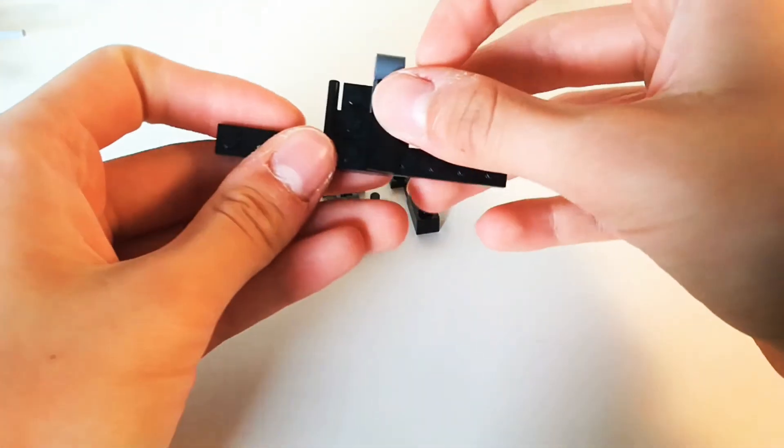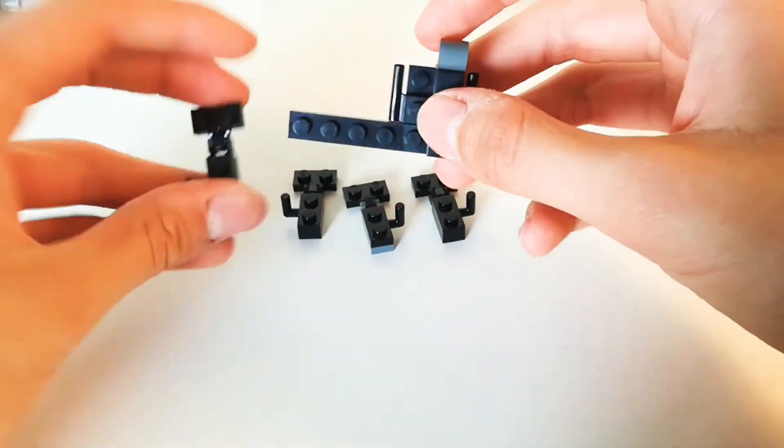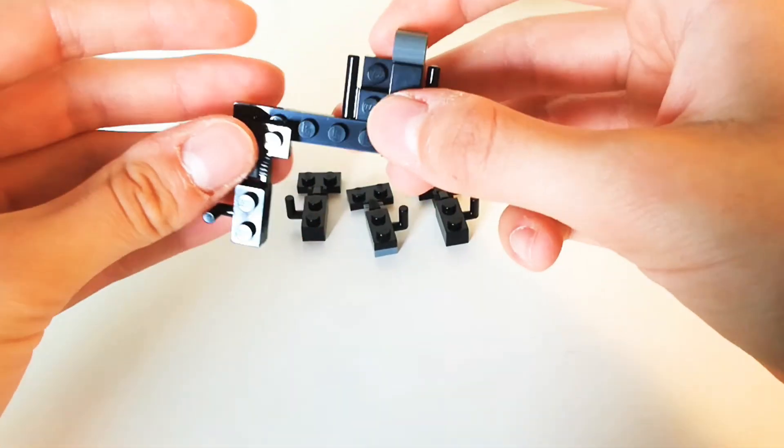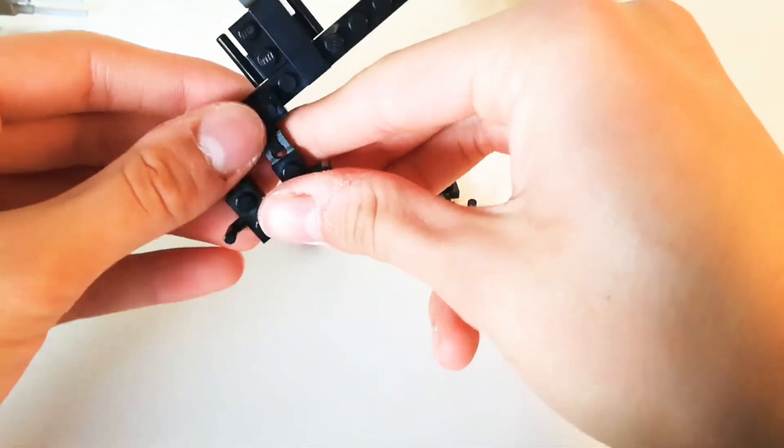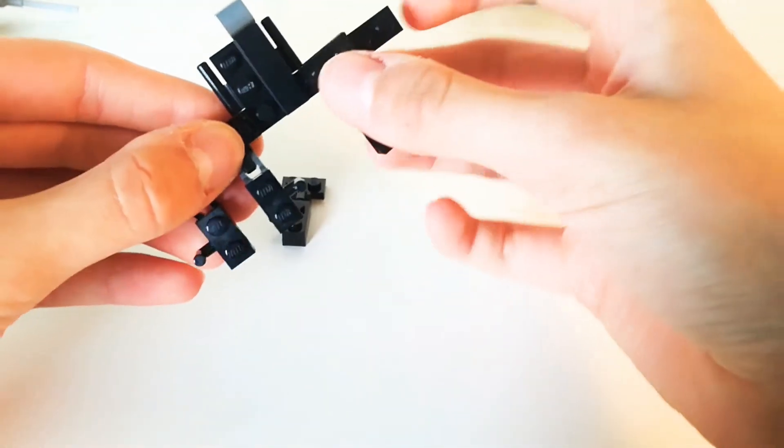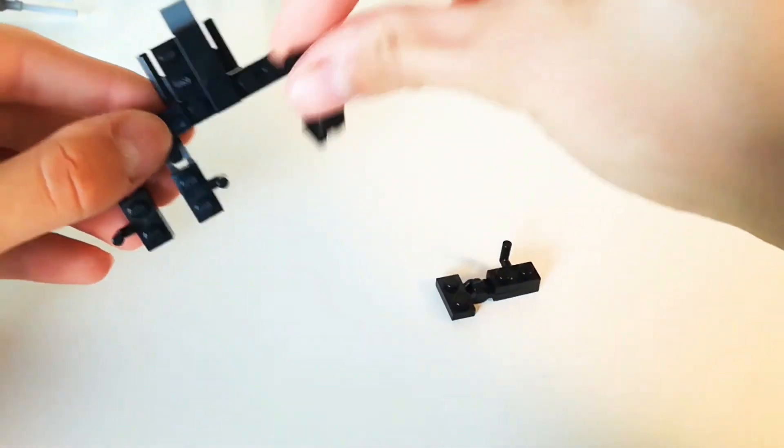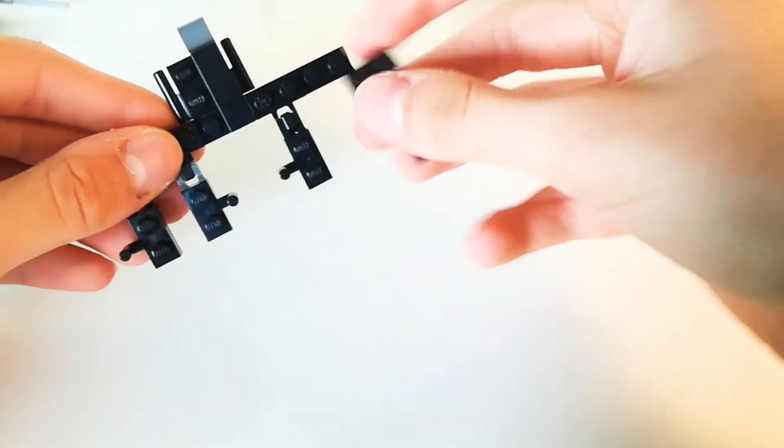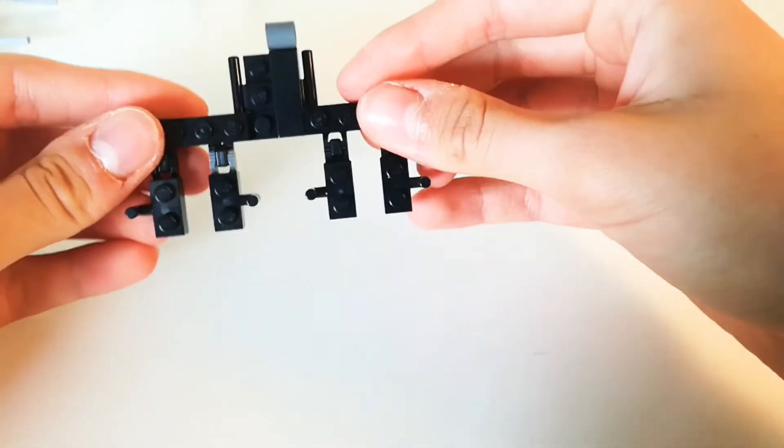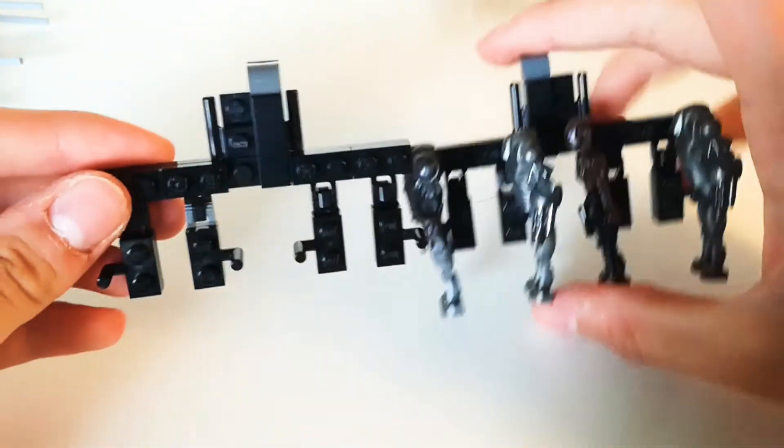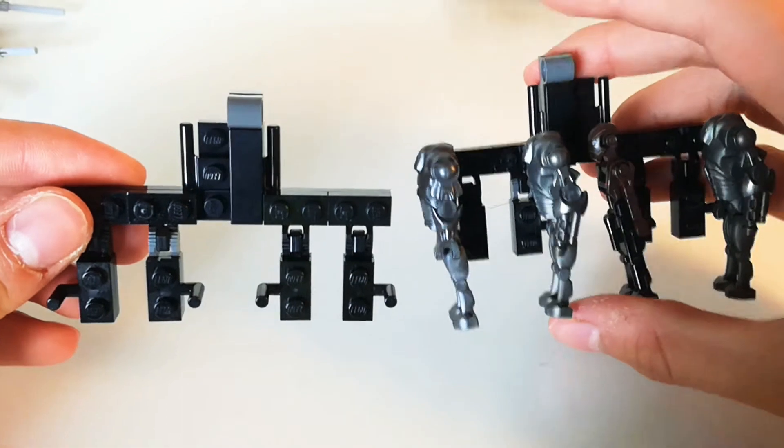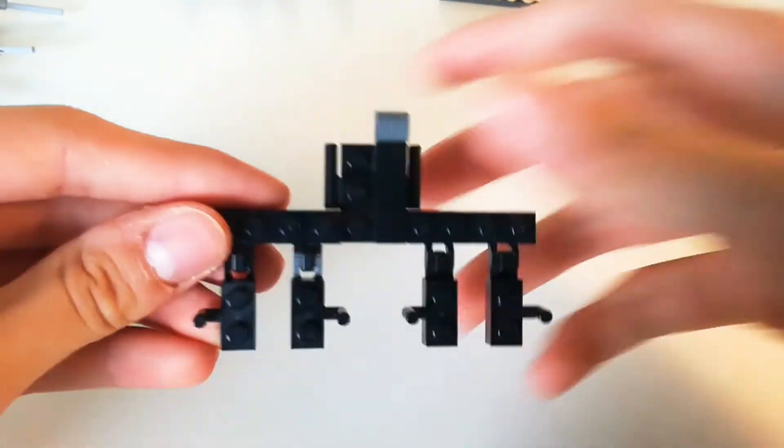Add this modified plate with a technic hole over here and a 1x3 tile to keep it nice and secure. Then you alternate these: one facing left, one facing the right, then one facing the left and one facing the right. When you're building the left one, which is this one here, you just want to change the position of this one here.